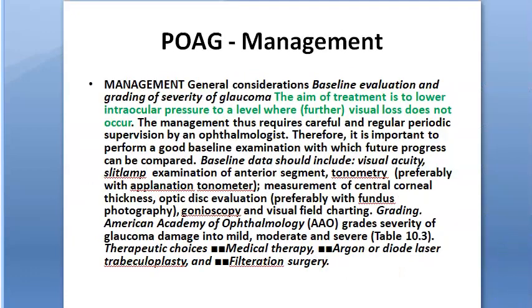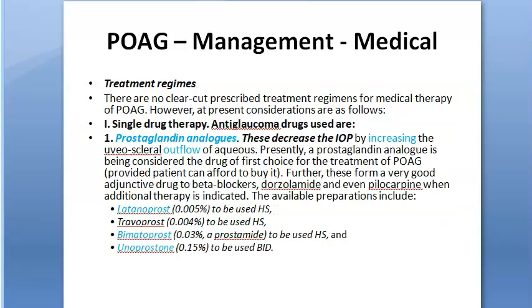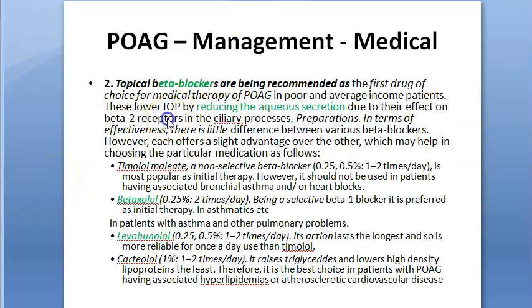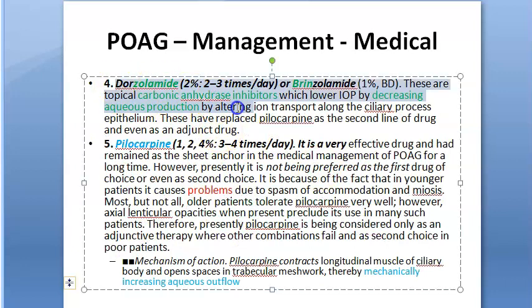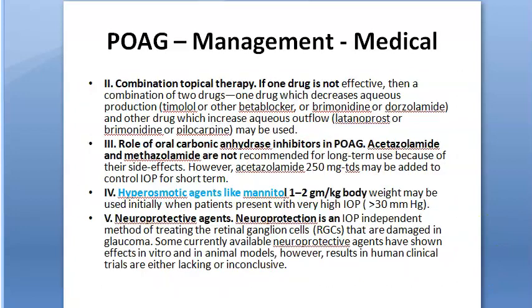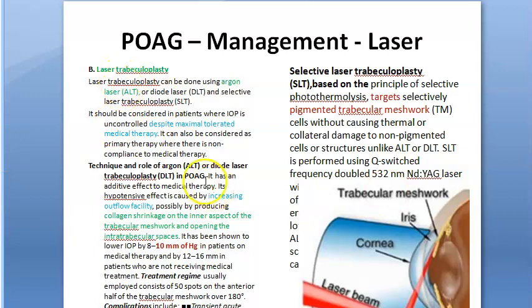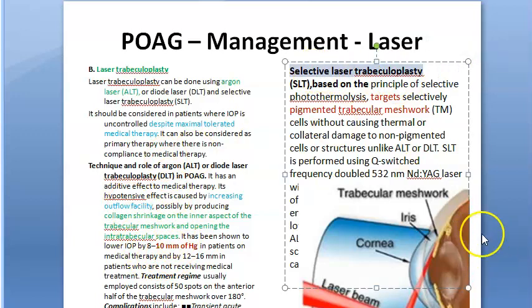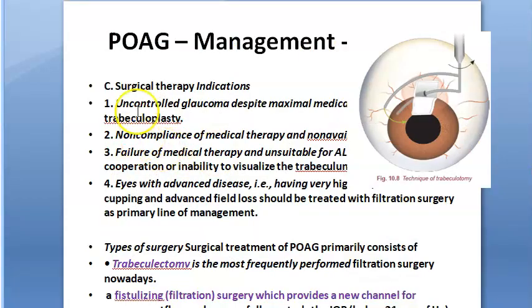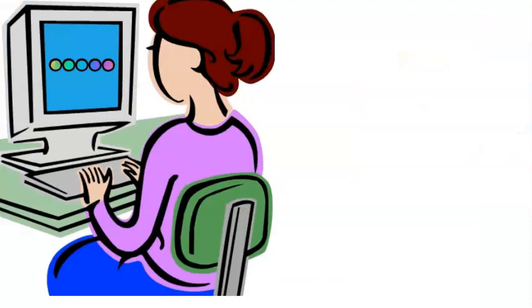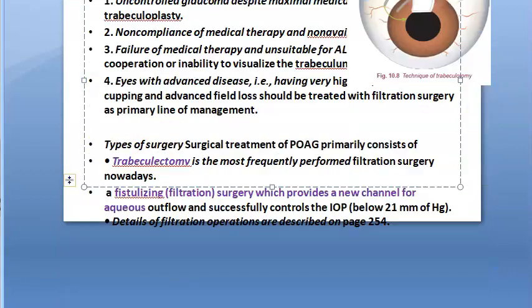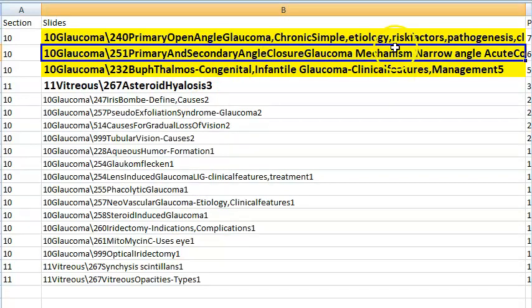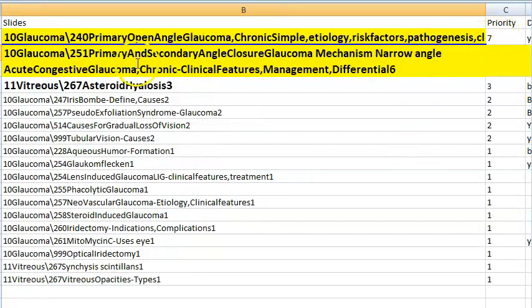Management of POAG: drugs — prostaglandins (latanoprost, bimatoprost), beta-blockers (betaxolol, levobunolol), carbonic anhydrase inhibitors (dorzolamide, brinzolamide), and mannitol. Laser options: laser trabeculoplasty, selective laser trabeculoplasty (SLT) targeting only pigmented trabecular meshwork. Surgery: trabeculectomy (fistulizing or filtration surgery).